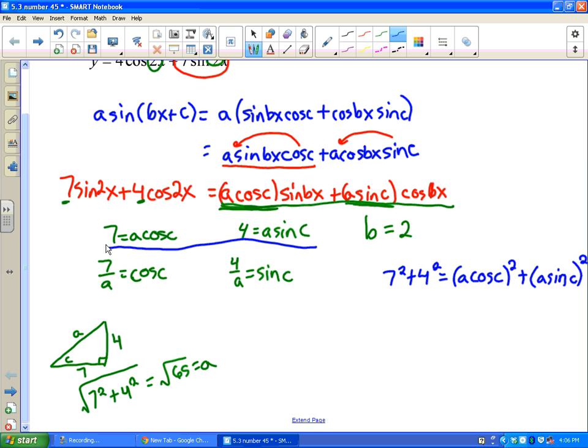So you should be able to see, hey, that 7 squared plus 4 squared has to equal the other side of their equation squared. So if I finish this out, I get 65 on the left side. This squared distributes and gives me a squared cosine squared c, and then a squared sine squared c. And then I would factor out the a squared and get cosine squared plus sine squared.